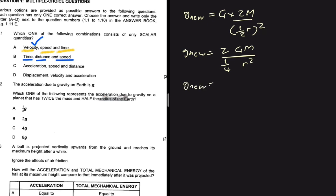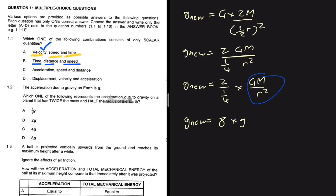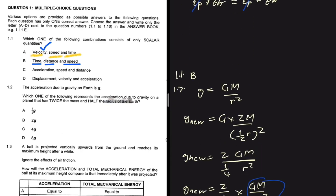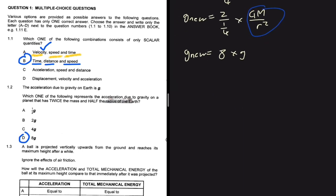Writing this out, g_new equals 2 divided by 1/4 multiplied by g·m/r², and the g·m/r² term is just the original g of Earth. So 2 divided by 1/4 gives 8, meaning g_new equals 8g. That is option D, so for 1.2 the answer is D.